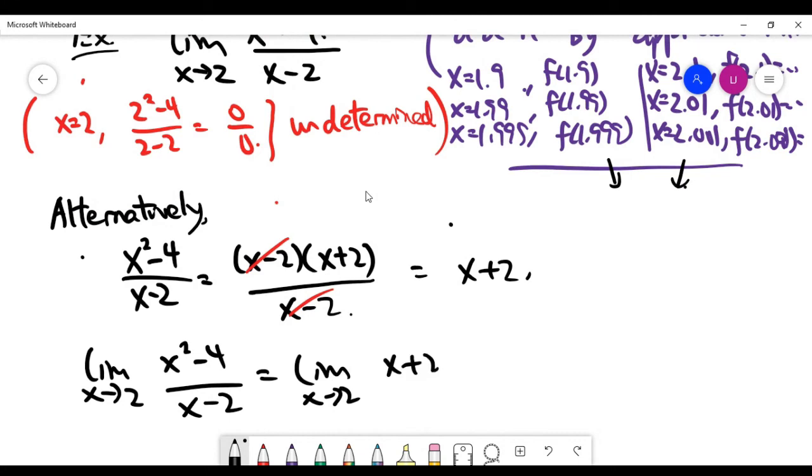It gives us a hint that after the cancellation we actually get the answer easily. Now if I replace x by 2 there's no problem at all - it's going to be 4, and the answer 4 is the same as the answer you got in the last video.